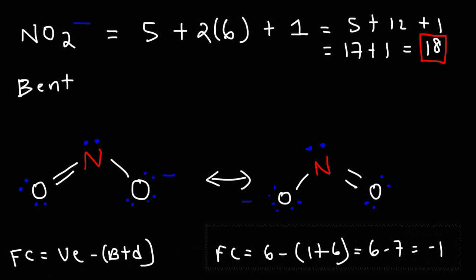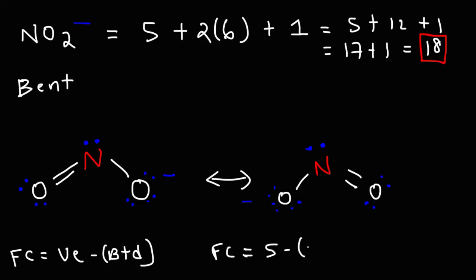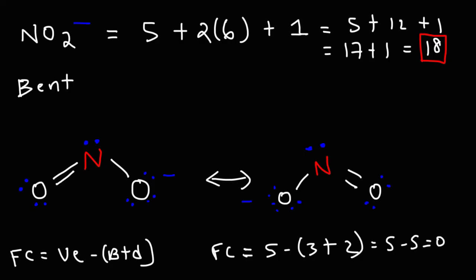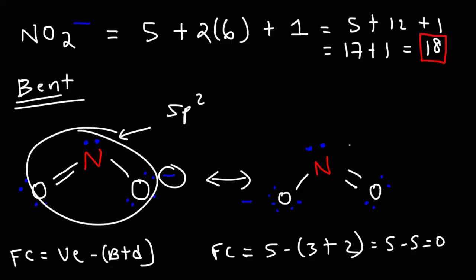For the central nitrogen atom: nitrogen has five valence electrons, a total of three bonds, and one lone pair (two dots). So it's five minus five, which equals zero — nitrogen is neutral in this Lewis structure. The overall charge comes from the negative charge on one of the two oxygen atoms. So that's the Lewis structure of the nitrite ion — now you know how to draw it, its molecular shape, its hybridization, and how to draw both resonance structures of this polyatomic ion. Thanks for watching.